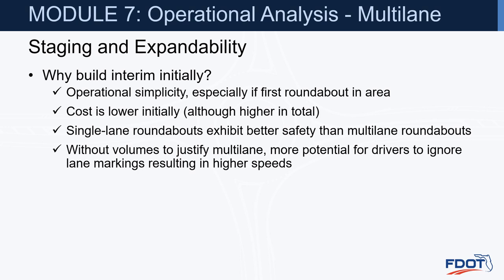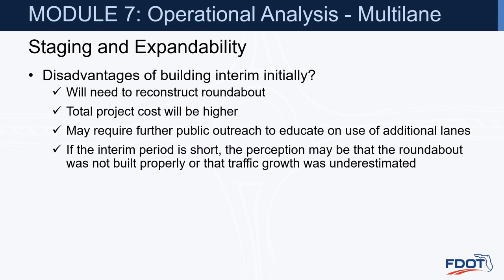Why build an interim initially? Advantages include operational simplicity — especially if it's the first roundabout in an area — lower initial cost, better safety for single lane roundabouts, and avoiding the higher speeds that result from drivers ignoring lane markings when volumes don't justify multi-lane. Disadvantages include needing to reconstruct the roundabout, higher total project cost, further public outreach for additional lanes, and if the interim period is too short, it may appear the roundabout was not built properly or that traffic growth was underestimated.